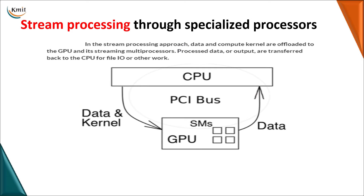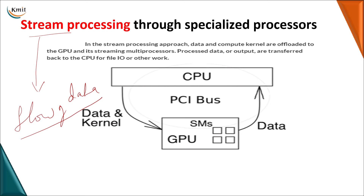Finally, when you go for the specialized processor hardware model, the corresponding software model is stream processing. A stream here is nothing but a continuous flow of data. We use a specialized processor — the GPU — to perform the operation on this continuous flow: it takes the data, performs the operation, and gives back the data. This is a continuous form of performing operations. We will see the next topics in the next class.